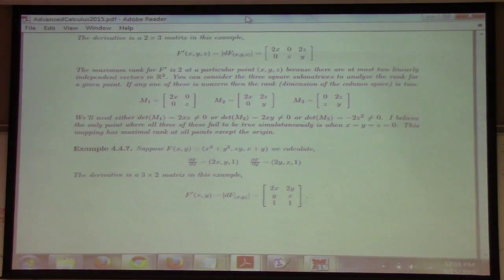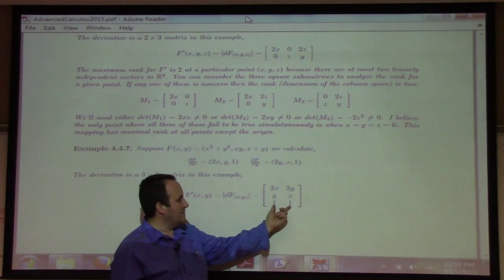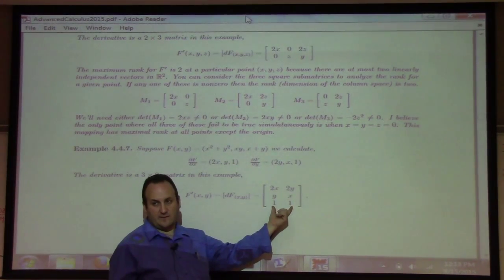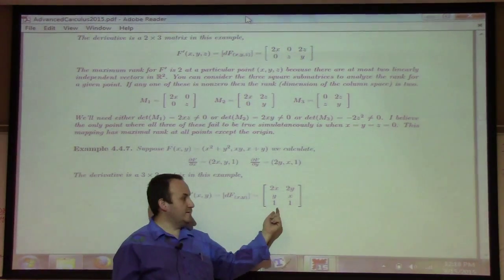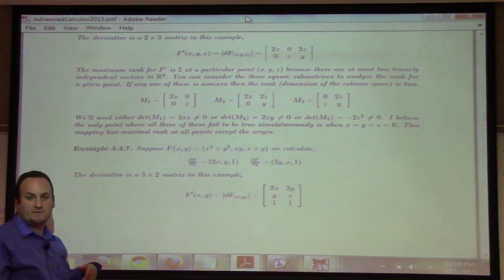You guys starting to see how this game is played? Here's a mapping from R2 to R3. What's the rank of the Jacobian here? If x is equal to y, then these match up. So x equals y is a place where I'm going to have rank one. I always have rank at least one because of this lovely one here. It can't be identically zero, so rank zero is not an option.